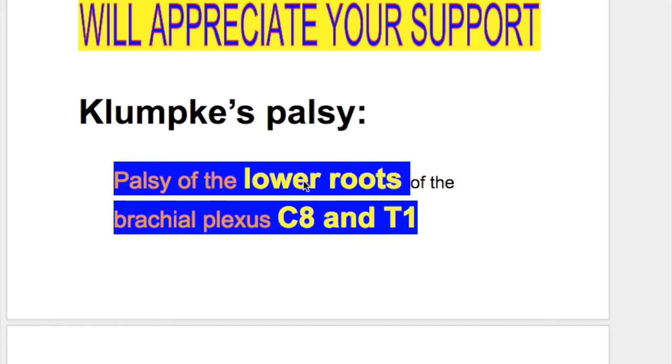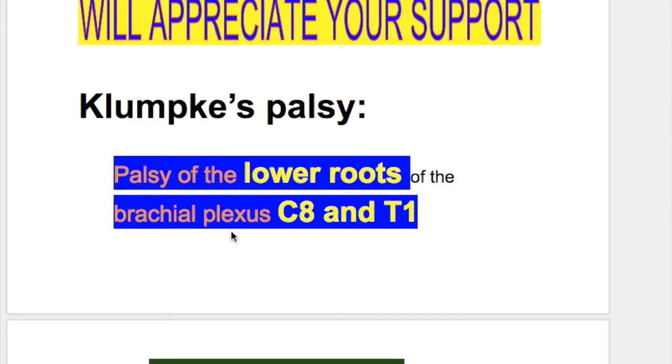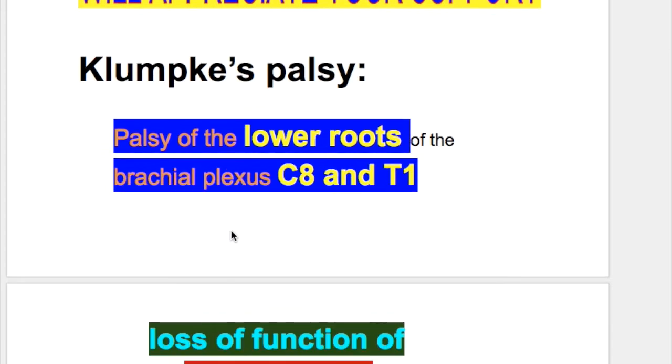The palsy of the upper root of the brachial plexus causes Erb's palsy, also known as radial palsy, involving cervical 5, 6, and 7.